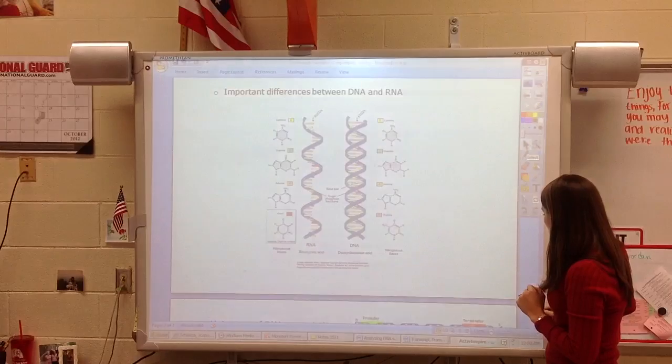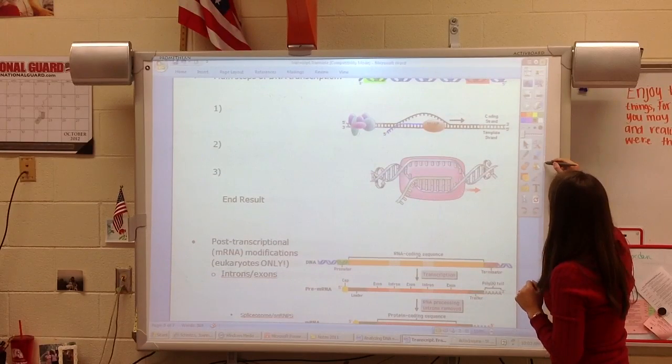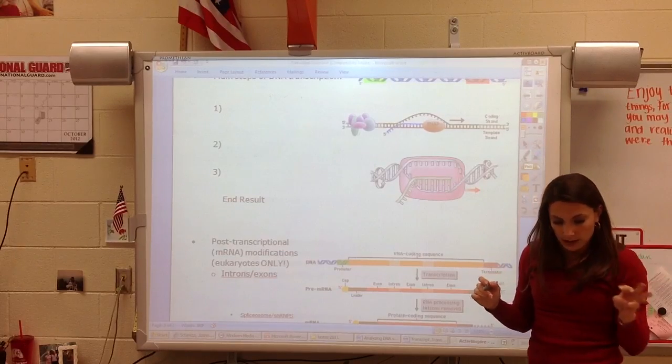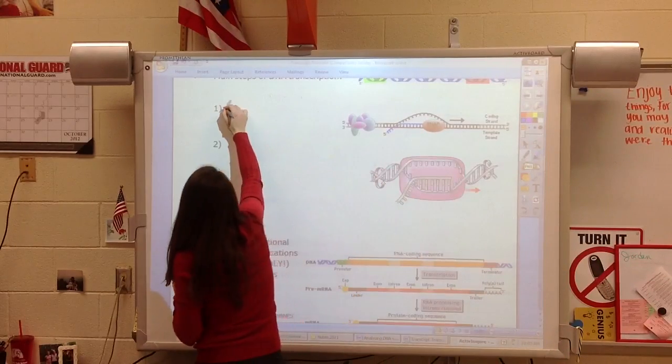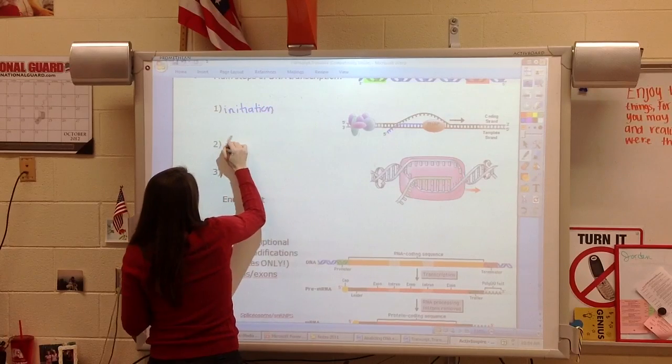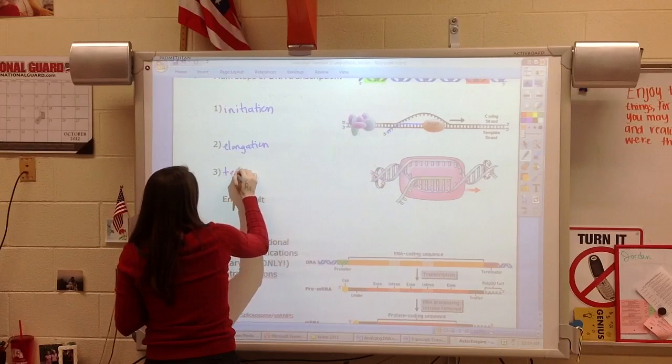And so what we really want to get to is how does transcription happen. And so we're going to real quickly try to cover that. There are three main steps. The first is initiation. The second is elongation. And the third is termination.